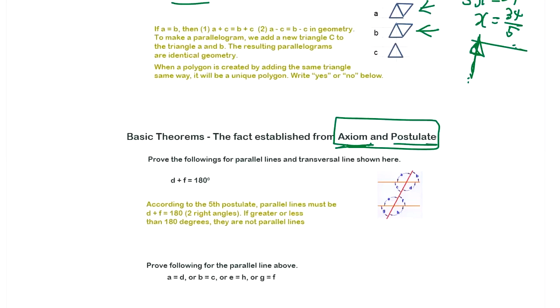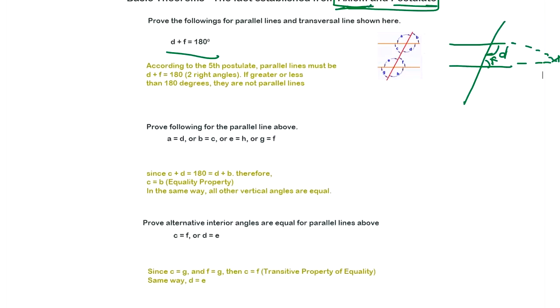Prove the following for parallel line and transversal line shown here. D plus F. So you have a line, parallel line, and D is this one, F. D plus F is 180. This is the fifth postulate. If parallel, it should be 180. If less than 180, the line meets somewhere when you extend. So it's not parallel line. So you can prove A equal D, or B equal C, or C equal H, or G equal F.